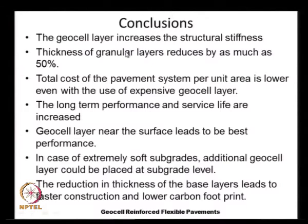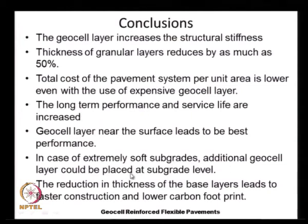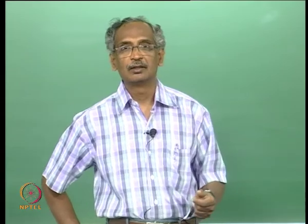In conclusion, the use of a geocell or geogrid layer increases the structural stiffness and the thickness of granular layers can be reduced by as much as 50 percent. The total cost of the pavement system per unit plan area is lower even with the use of expensive geocell or geogrid layers, and the long-term performance and service life are increased. For stiff geogrid and stiff subgrade conditions, geocell near the loaded surface gives good benefit; for extremely soft subgrade soils, an additional geocell layer at subgrade level improves compaction. The reduction in base layer thickness leads to faster construction and lower carbon footprint of construction activities. Thank you very much; if you have any questions, you can send an email.